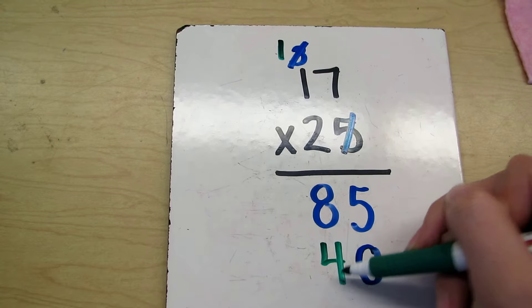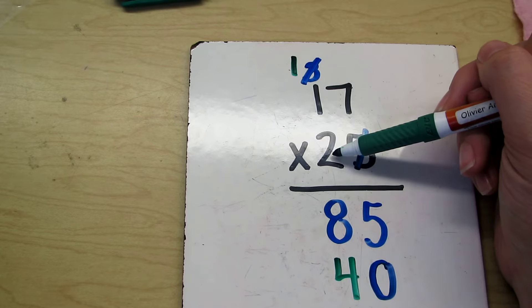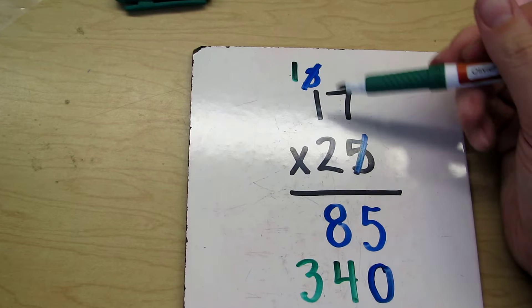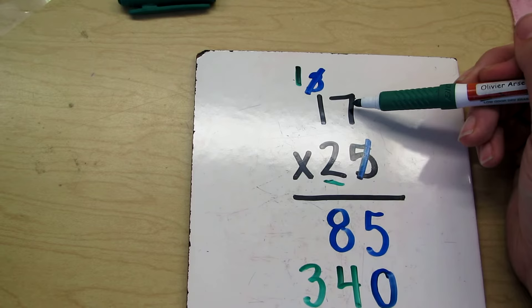And then we're going to go to our 2 tens place. We have 2 there and 1 there. So 2 times 1 is 2 plus 1 is 3. So put our 3 down here. So technically what we just did is 20, so we have 2 times 17 is 340. So that's where the 340 comes in.